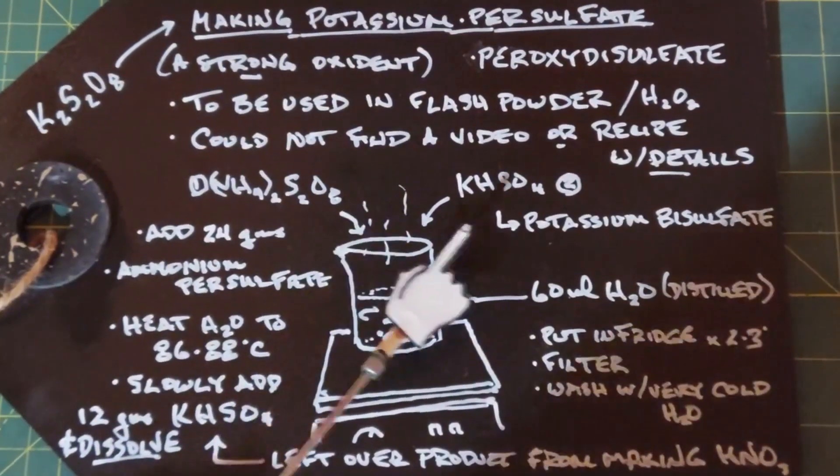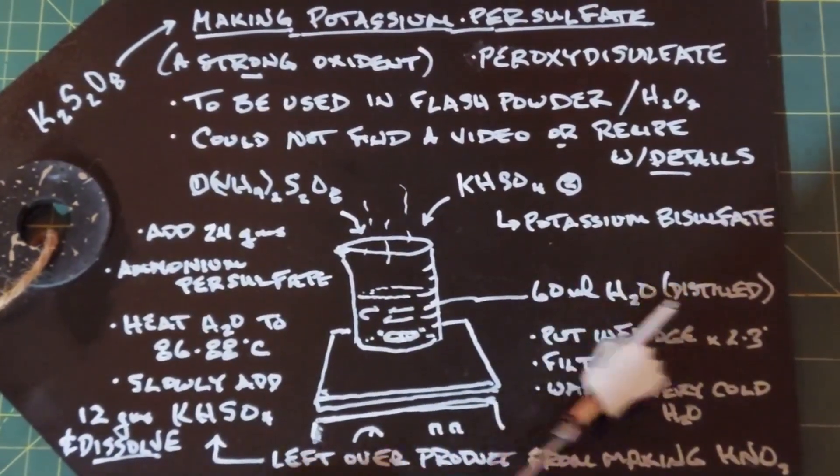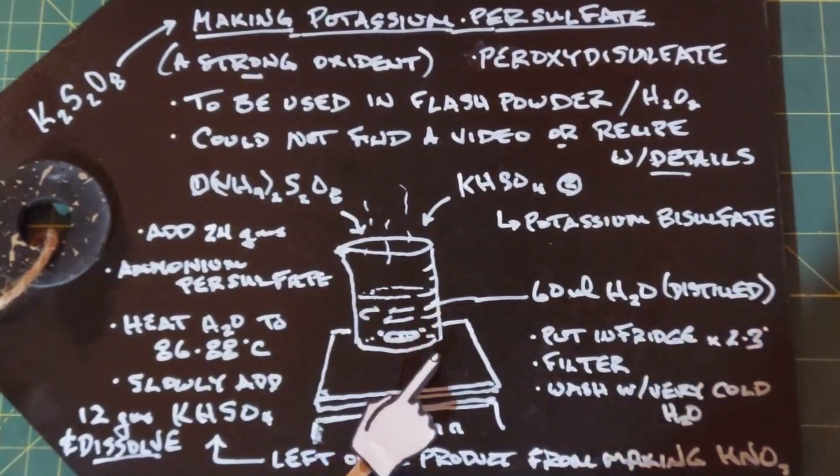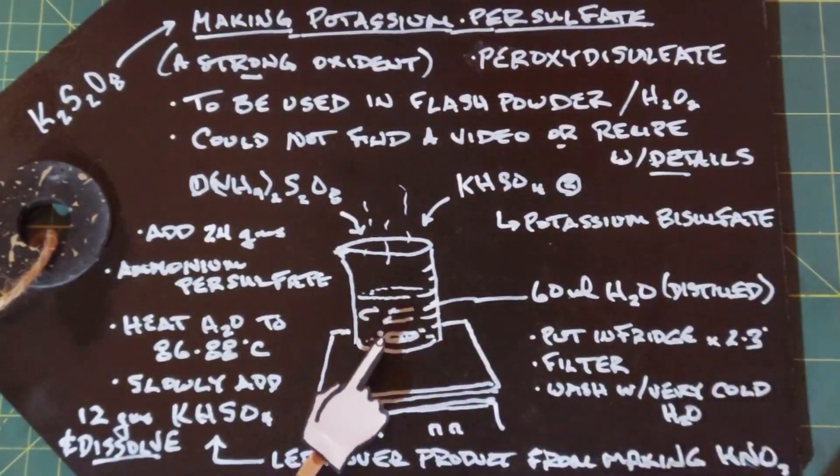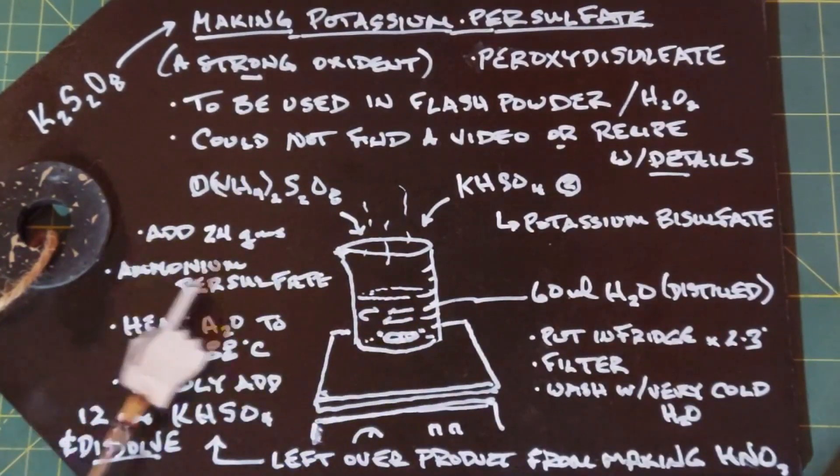I started with 60 milliliters of distilled water and put a stir bar in there and started to heat the water to put in the ammonium persulfate.